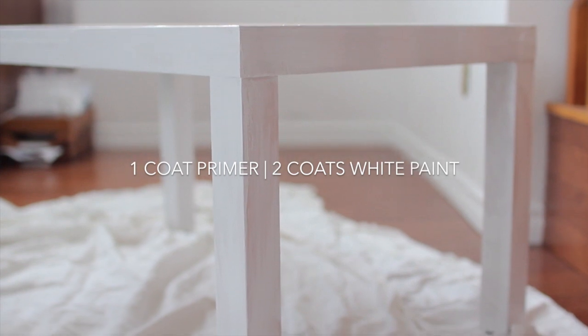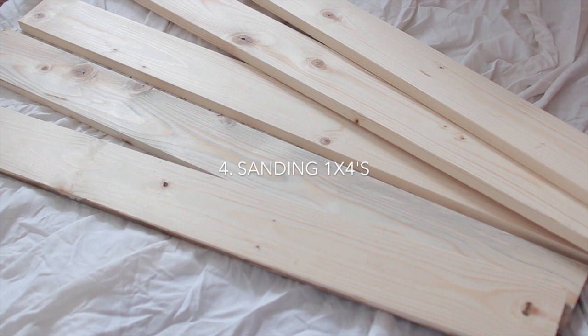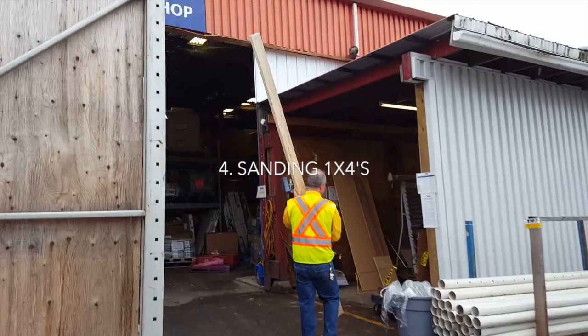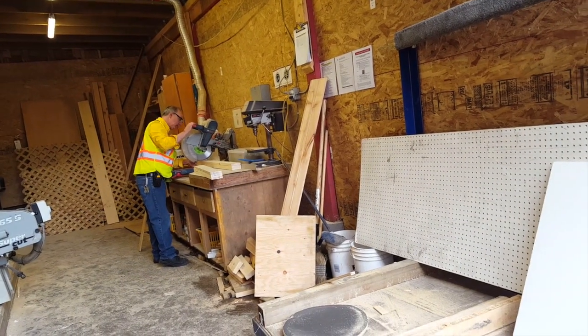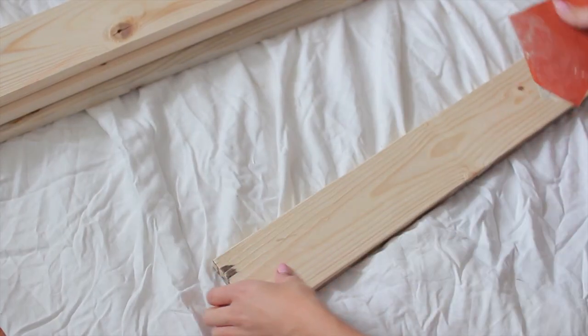I went to Rona for one-by-fours, which cost less than four dollars each. My table required seven pieces at 37 inches long, and we were able to cut that from three ten-footer one-by-four pieces. Make sure that you measure your table and be sure to give them the exact measurements of how long you want your one-by-fours to be.